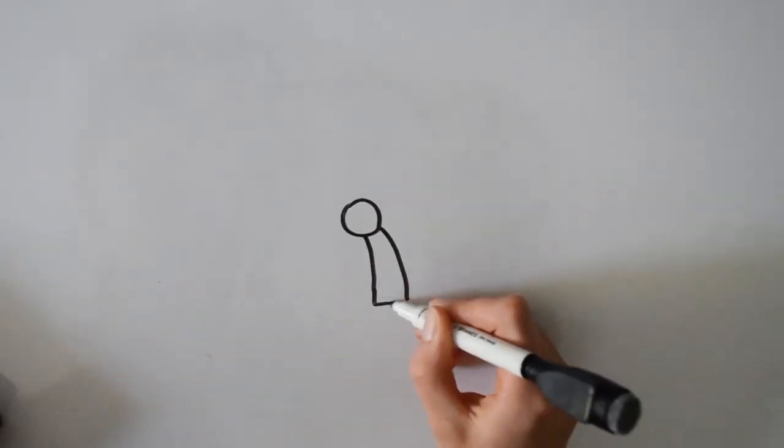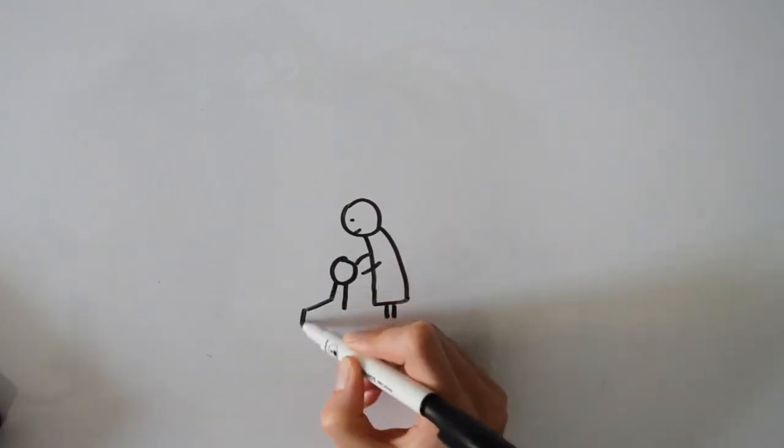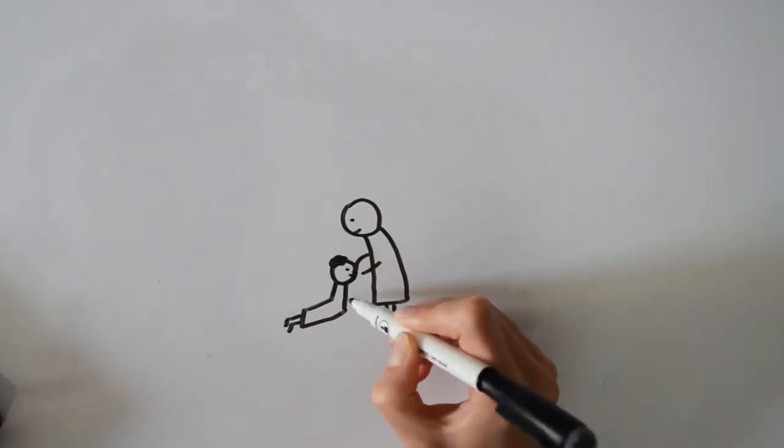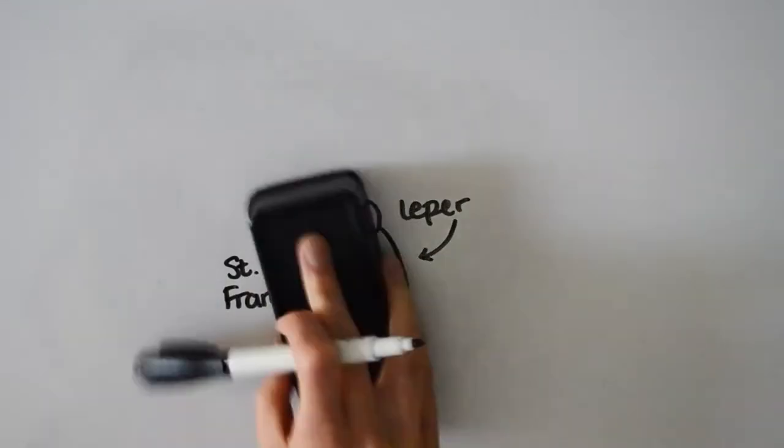One day, Francis passed a leper, someone who would have disgusted him before, and kissed his hand. As Francis rode off, the leper disappeared. Francis believed that this was a test from God, one that he had passed.